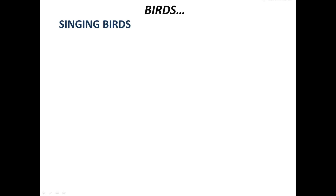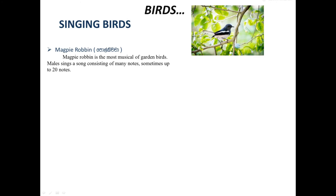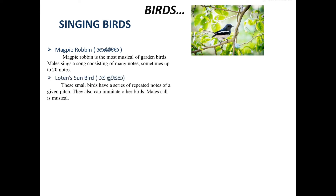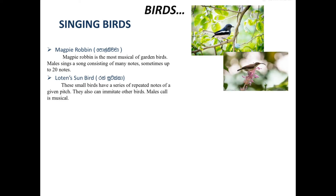Singing birds. Magpirobin, Polkitscha — the Magpirobin is the most musical of garden birds. The male sings a song consisting of many notes, sometimes up to 20 notes. Loten Sunbird, Pransutika — these small birds have a series of repeated notes of a given pitch. They can also imitate other birds. The male's call is musical.